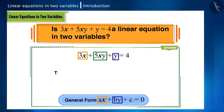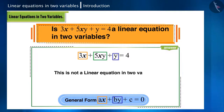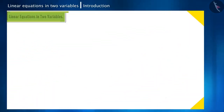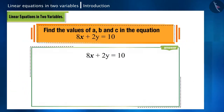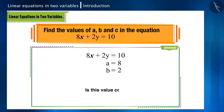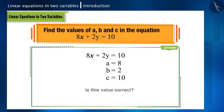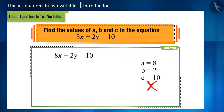Therefore, it is not a linear equation in two variables. Now let's take another question: find the values of a, b, and c in the equation 8x + 2y = 10. Here a = 8, b = 2, and c = 10 — is this value correct? No.